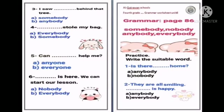Now we have the worksheet. Choose the suitable word. Number one: is there anybody or nobody home? Number two: they are all smiling, so is anybody or everybody happy? Number three: I saw behind that tree — somebody or anybody? Number four: everybody or somebody stole my bag? Number five: can Farag help me — anyone or everyone? Number six: everyone is here so we can start our lesson — nobody or everybody?